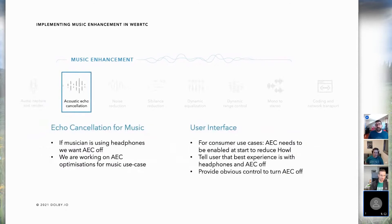With acoustic echo cancellation, in most cases we assume musicians will wear headphones for best quality and will want to switch off acoustic echo cancellation. However, we know sometimes people still need echo cancellation — particularly kids in music lessons — so we're working on optimizations for echo suppression in the music use case. For consumer use cases, you have to have echo cancellation enabled by default, otherwise you'll just get howl. You need to tell the user that the best experience is with headphones and provide an obvious control to turn it off.